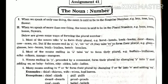Below are given some ways of forming the plural number. Here some rules are given for how to make plural from singular. First: most of the nouns take 's' to form their plural. Most nouns become plural by adding 's' at the end. For example: hand → hands, book → books, door → doors, cow → cows, etc.